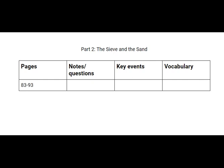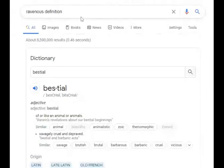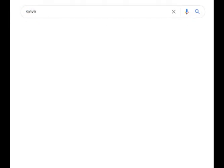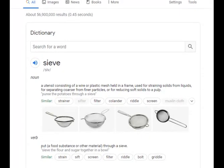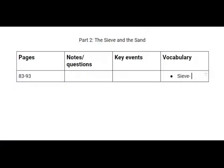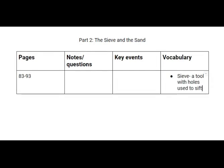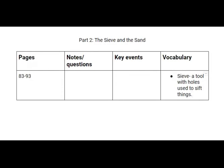Immediately, we haven't even started, but we have a vocabulary word which you may or may not already know: 'sieve.' Let's add this in before we go any farther — this might give us some clue as to what the chapter is about, at least metaphorically. The definition: a utensil consisting of a wire or plastic mesh held in a frame, used for straining solids from liquids or separating coarser from finer particles. So a tool with holes used to sift things.